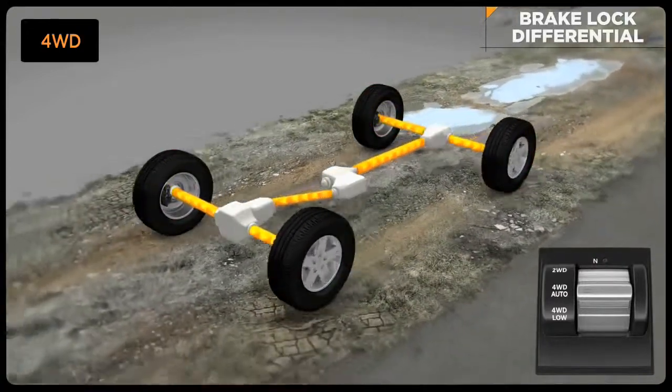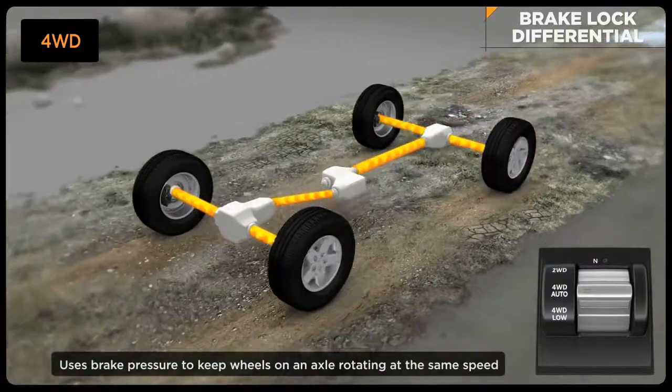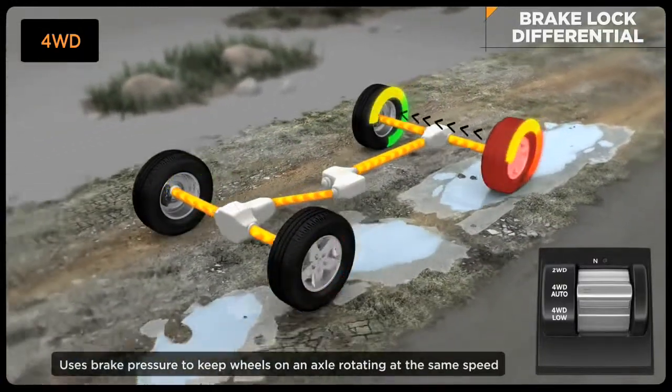For instance, if a wheel has lost traction and is spinning freely, the system will automatically apply brake pressure to that wheel, which allows more torque to go to the opposing wheel that has traction.